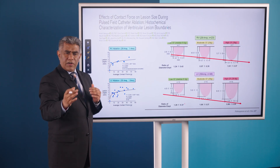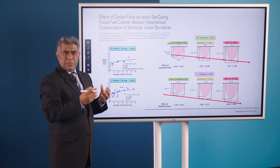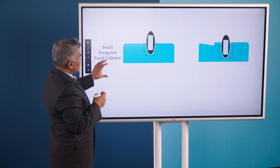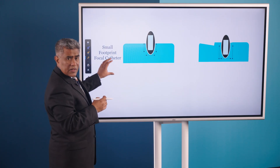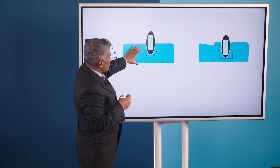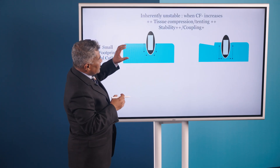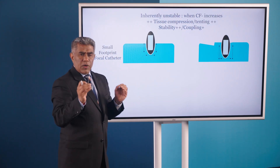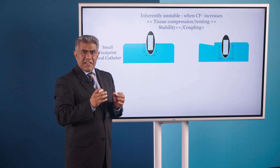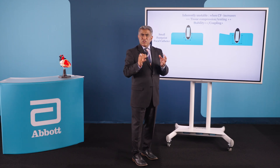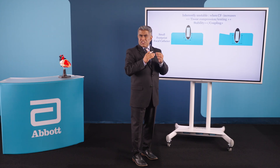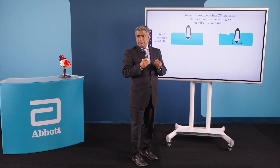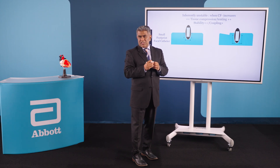I want to take you a step further and tell you the role of contact force and stability with different types of catheters. This is an example of a small footprint focal catheter — what you are seeing here is a catheter placed into tissue. As we increase the contact force, the catheter dips into the tissue a little bit. The 3.5-millimeter small footprint focal catheter is inherently unstable. But when we increase the contact force, we compress tissue if the tissue is thick and stiff, or we tent tissue if the tissue is thin. This allows for improved stability and coupling, and that's how contact force seems to be a bigger factor relevant for lesion formation with these small footprint catheters.